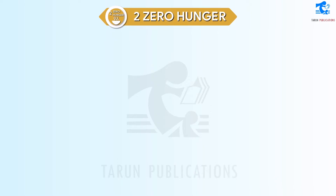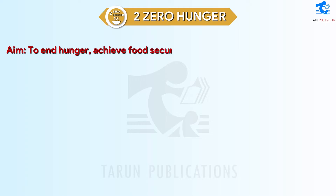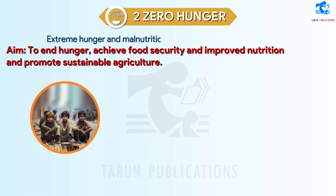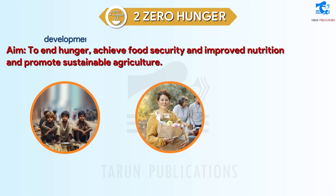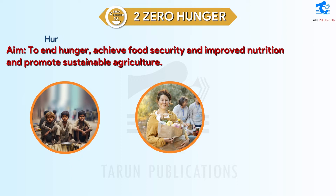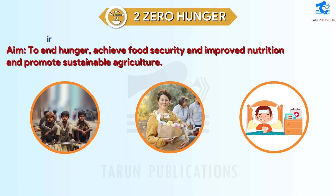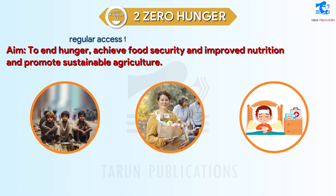SDG 2: Zero Hunger. Aim: to end hunger, achieve food security and improved nutrition, and promote sustainable agriculture. Extreme hunger and malnutrition remain barriers to sustainable development and create a trap that people cannot easily escape. Hunger and malnutrition mean less productive individuals who are more prone to disease, and thus often unable to earn more and improve their livelihoods. 2 billion people in the world do not have regular access to safe, nutritious, and sufficient food.